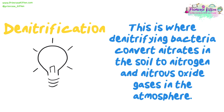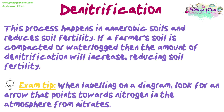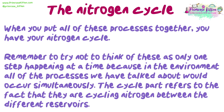Denitrification is where denitrifying bacteria convert nitrates in the soil to nitrogen and nitrous oxide gases in the atmosphere. This process happens in anaerobic soils and reduces soil fertility. If a farmer's soil is compacted or waterlogged, the amount of denitrification will increase, reducing soil fertility. Exam top tip: when labelling on a diagram, look for an arrow that points towards nitrogen in the atmosphere from nitrates. When you put all of these processes together, you have your nitrogen cycle. In the environment, all of the processes would occur simultaneously, cycling nitrogen between the different reservoirs.